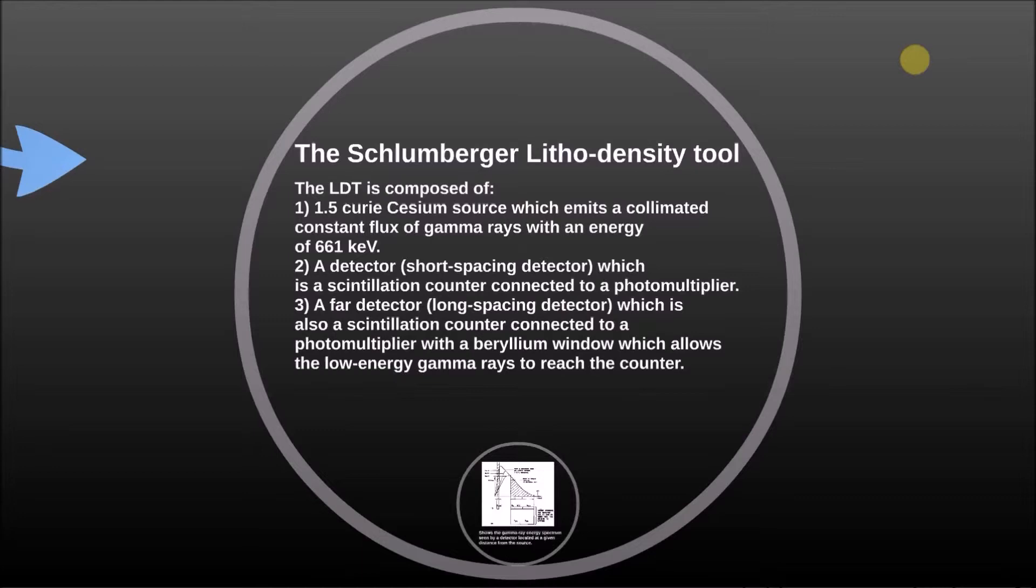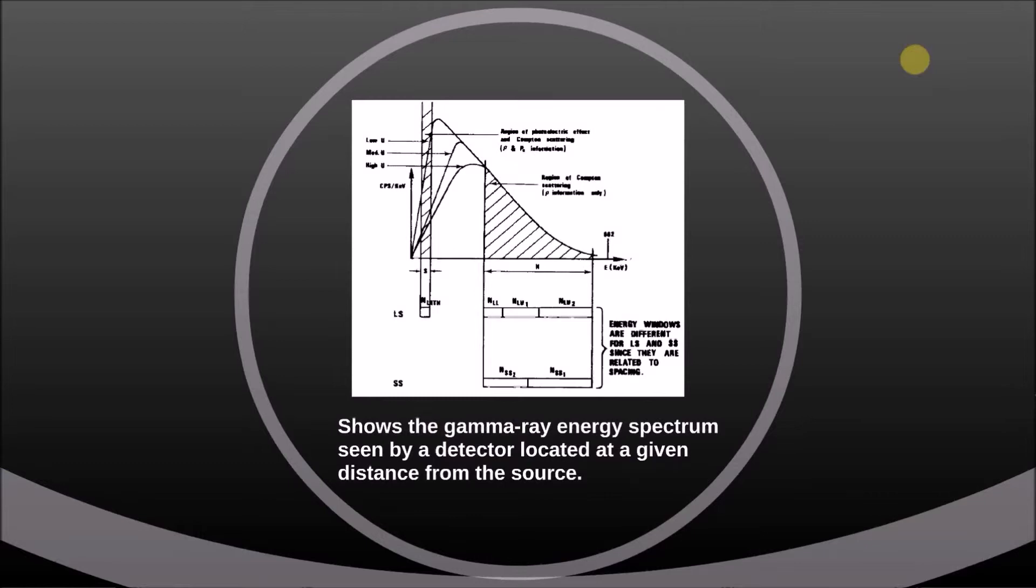A far detector, long spacing detector, which is also a scintillation counter connected to a photomultiplier with beryllium window, which allows the low energy gamma rays to reach the counter. This picture shows the gamma ray energy spectrum seen by a detector located at a given distance from the source.